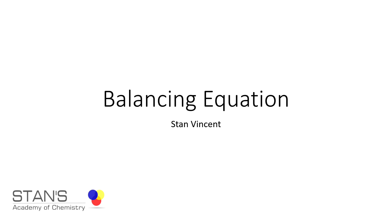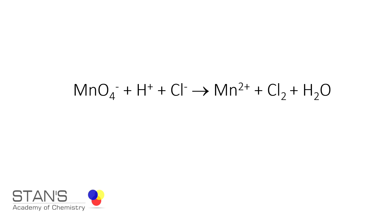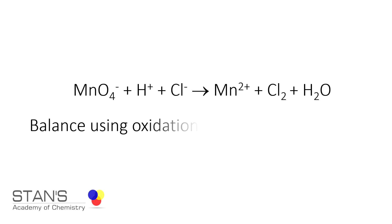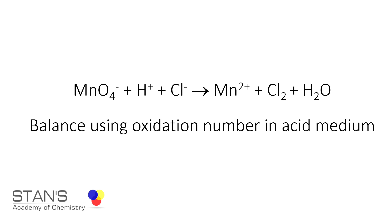In this video we're going to balance an equation using the oxidation number method. The equation we're going to balance has manganese in permanganate ion reacting with chlorine from chloride ions to produce Mn²⁺, Cl₂.